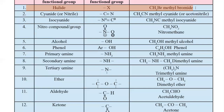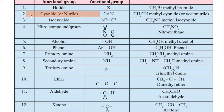The second type of functional group is cyanide, also called nitrile. The example is CH3CN, named methyl cyanide because CH3 is methyl and CN is cyanide. One more common name for this compound is acetonitrile.